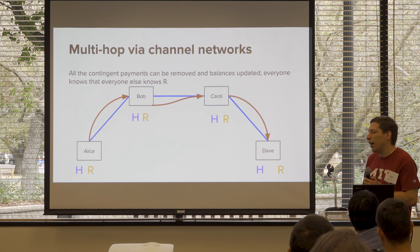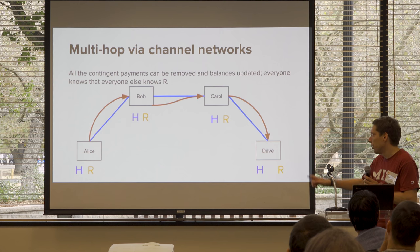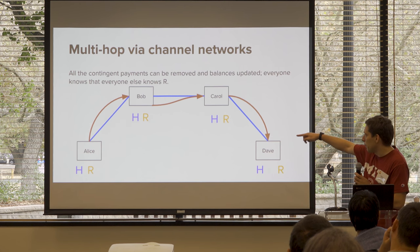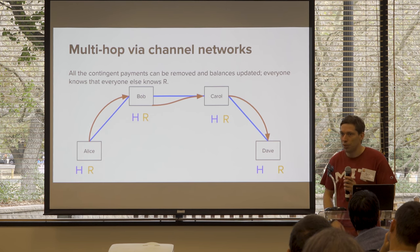You can also have multiple different contingent payments within a single channel simultaneously — these are called Hash Time Lock Contracts, or HTLCs. For example, sending to Carol as well as Dave with two different R values.